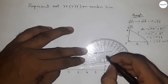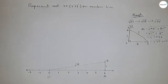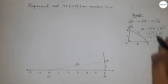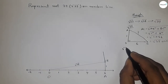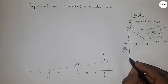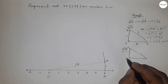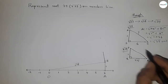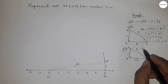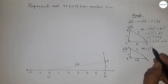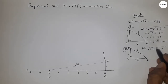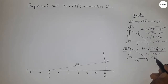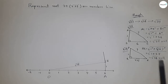Now draw a perpendicular line on point B. For root 38: if there is a right angle triangle PQR with base root 37 and height 1, then hypotenuse equals root of (1 squared plus root 37 whole squared) = root of (1 + 37) = root 38 units.